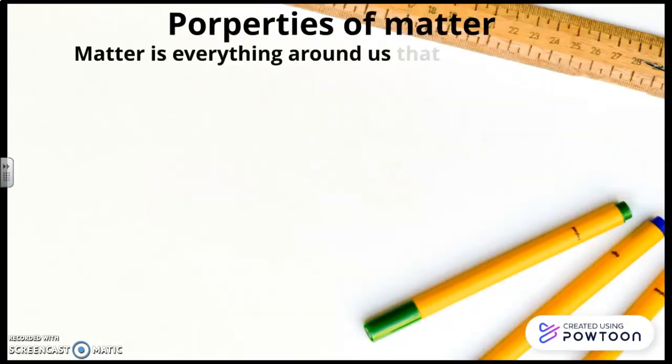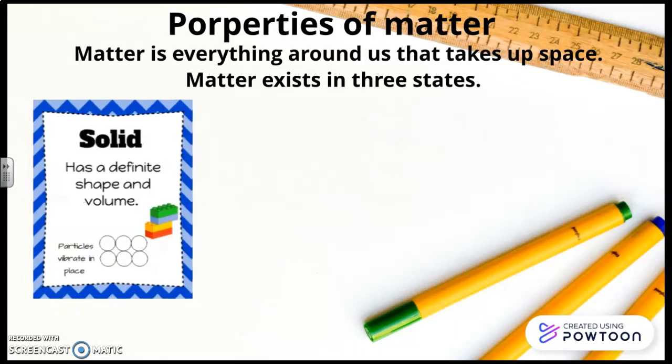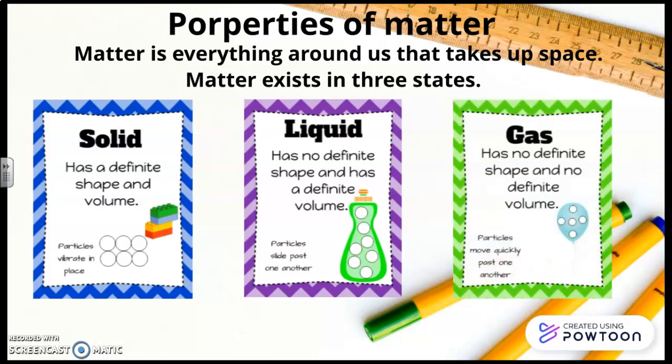Properties of matter. Matter is everything around us that takes up space. Matter exists in three states. Solid has a definite shape and volume. Liquid has no definite shape and has a definite volume. And gas has no definite shape and no definite volume.